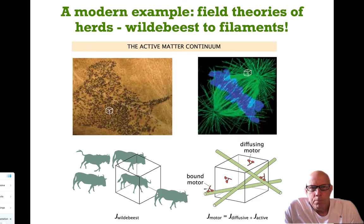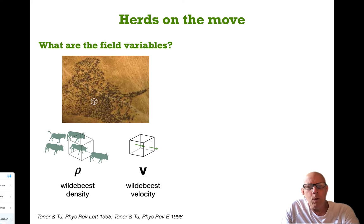Now I want to examine a modern example: field theories of herds. Note that this kind of thinking can be applied across a billion-fold range in length scales, all the way from wildebeest—which is at the kilometers length scale—to the ordering of filaments at the microns scale inside of a cell.